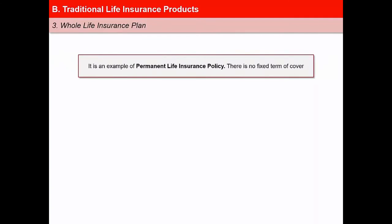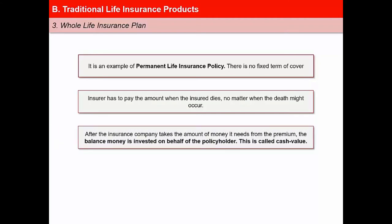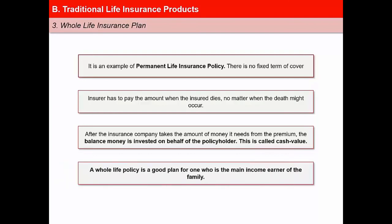After term insurance plans, let us discuss whole life insurance plans. While term insurance policies are examples of temporary insurance, whole life insurance is an example of permanent life insurance, meaning there is no fixed term of cover. The insurer offers to pay the agreed death benefit when the insured dies, no matter when the death might occur. The premiums can be paid throughout one's life or for a specified limited period. After the insurance company takes the amount needed from the premium to meet the cost of term insurance, the balance money is invested on behalf of the policyholder — this is called cash value. The whole life policy is a good plan for someone who is the main income earner of the family and wishes to protect loved ones from any financial insecurity in case of premature death.